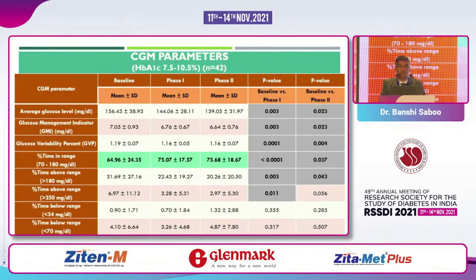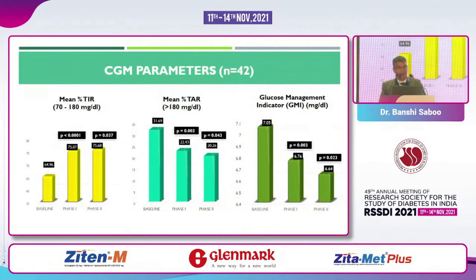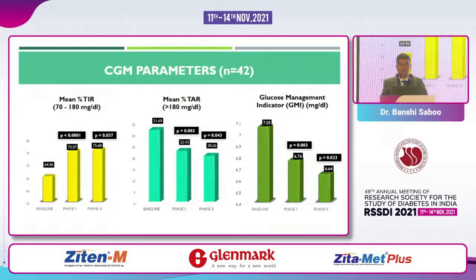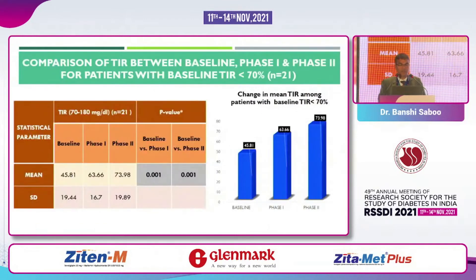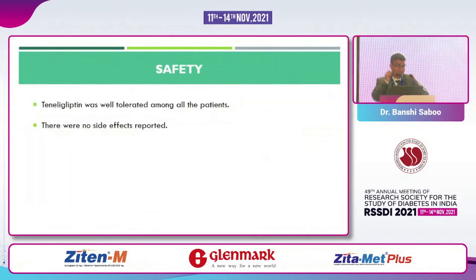There was no possibility of getting any hypoglycemia — time below range was not significant. There was a significant p-value for improvement in time in range with patients on teneligliptin. CGM parameters showed a significant improvement: time in range increased from 64% to 75.07% and 75.68%. Time below range showed no significant difference, and no patient experienced hypoglycemia. In patients with baseline TIR less than 70%, there was a significant difference between baseline, Phase 1, and Phase 2.